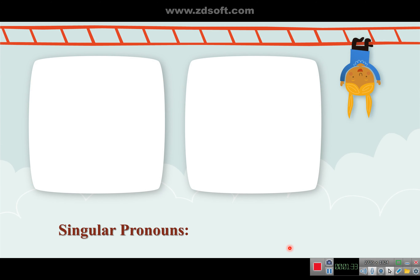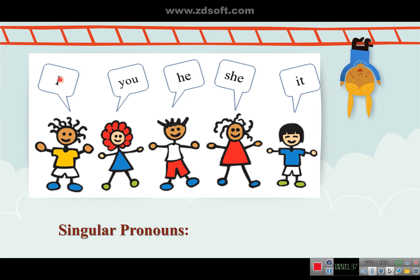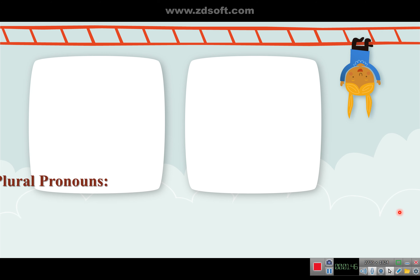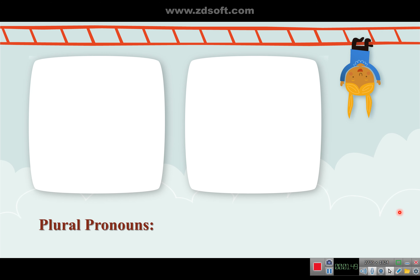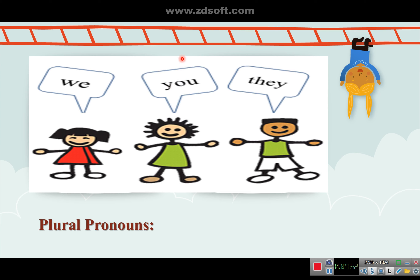The first category is singular pronouns, which are the following: I, you, he, she, and it. The second category is plural pronouns, which are the following: we, you, and they.